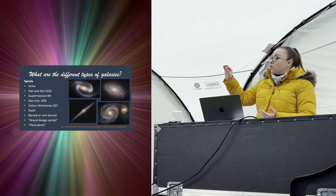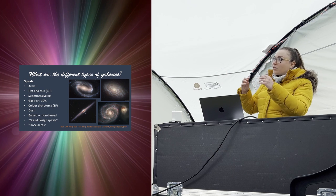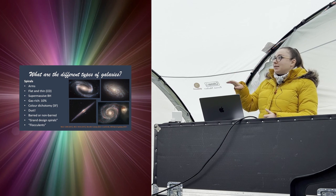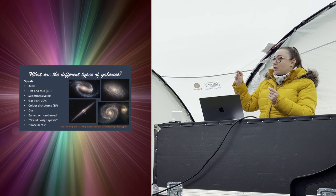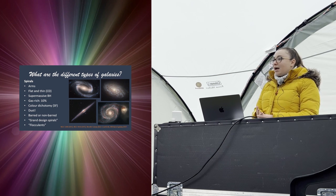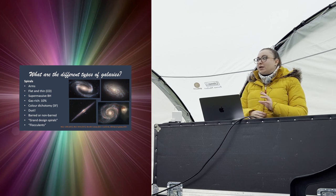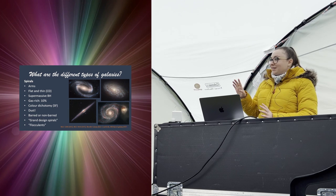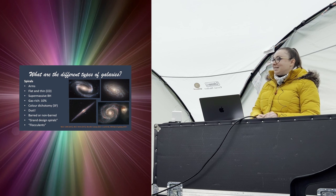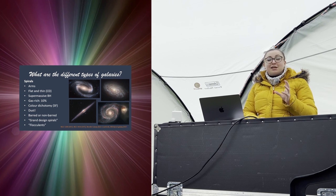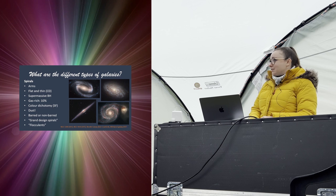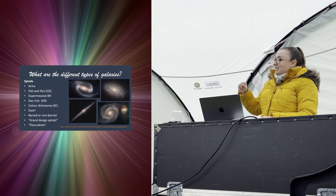Sometimes spiral galaxies have a bar structure in the middle — an elongated core instead of just a bright center. Exactly how that bar structure forms is an ongoing mystery. If there's a bar, the spiral arms usually come out of either end of it. We also see spiral galaxies edge-on, like the Needle Galaxy. Patrick Moore's favorite description was 'two fried eggs slapped back to back,' but their relative dimensions are actually more akin to a CD — that's how thin they are.